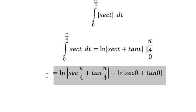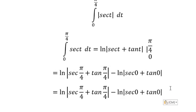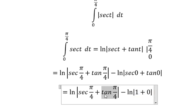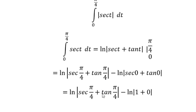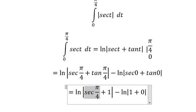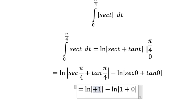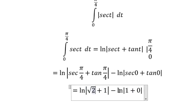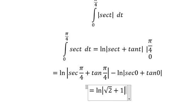Substituting 0: sec(0) equals 1 and tan(0) equals 0. So we get ln(√2 + 1) minus ln(1). Since ln(1) equals 0, the final answer is ln(√2 + 1). That is the end.